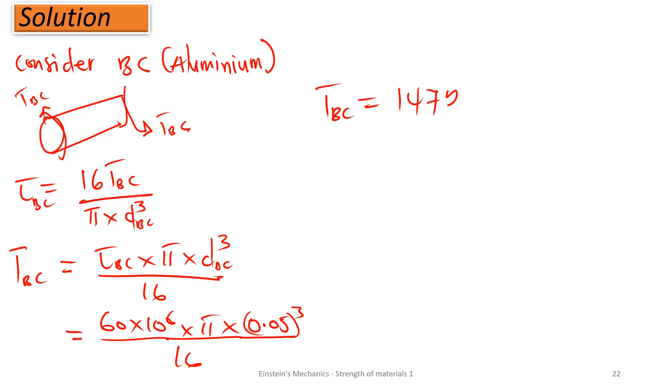Multiplying pi and the diameter given was 50. That is 0.05 cube on 16. That is giving us a torque in BC to be 1472.6 newton meter. So, what do you see? You can see that there is high torque required for the aluminum. This is the aluminum. This is the steel.